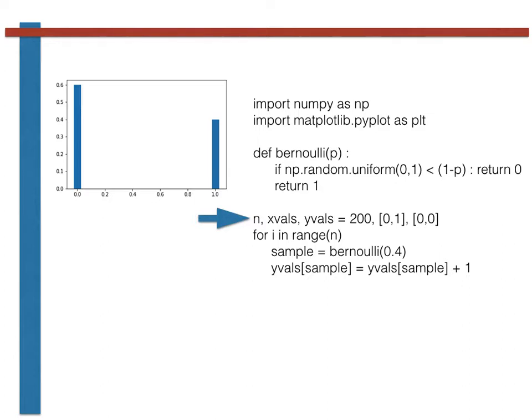The first of these lists, x vals, just contains the numbers 0 and 1. This ultimately will be used for the x coordinates of our bars. The second, meanwhile, has both elements set to 0 initially. This is the list called y vals.